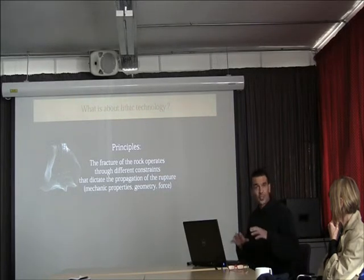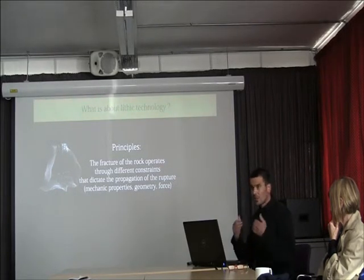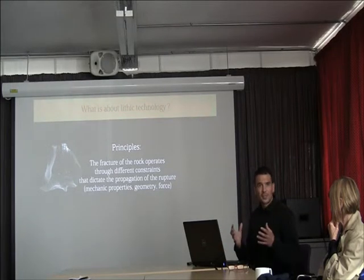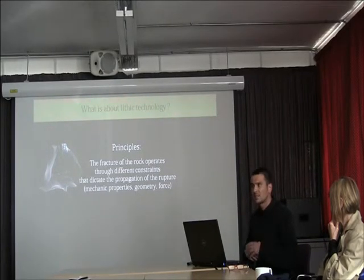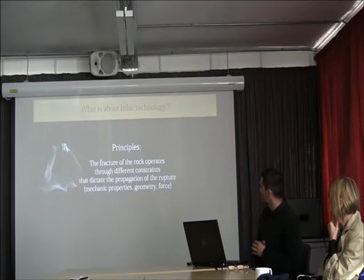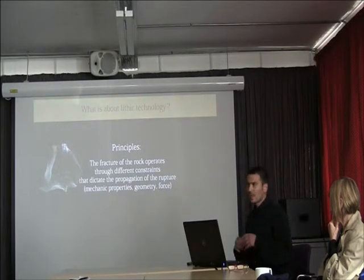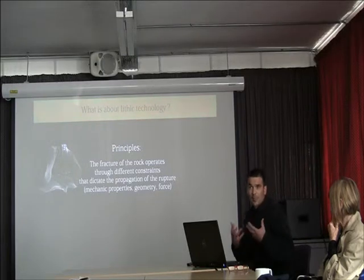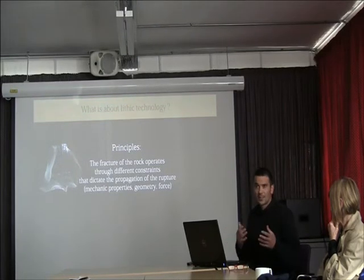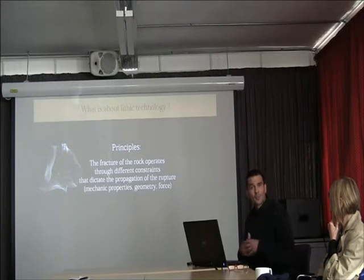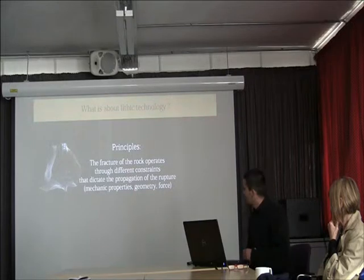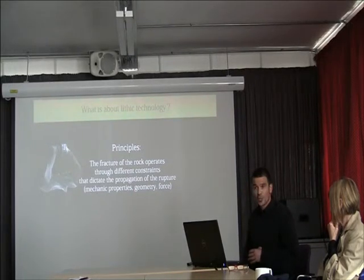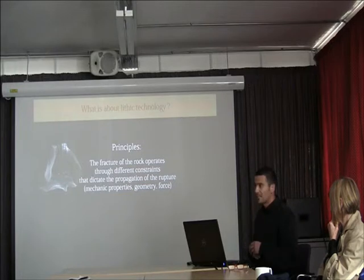The second constraint is the geometry of the core. If you want the rupture to develop, you need specific convexities — longitudinal convexity, lateral convexity — and also specific angles. The last constraint is the application of force: it can be percussion or pressure, direct or indirect. It's also the nature of the hammer — its density, its mass, whether it's organic or mineral — and the motion and force applied to the rock.